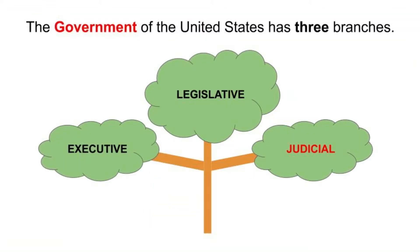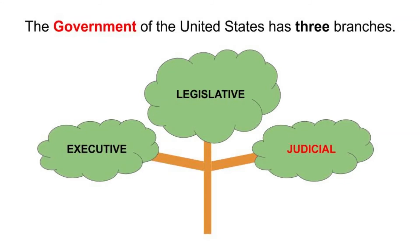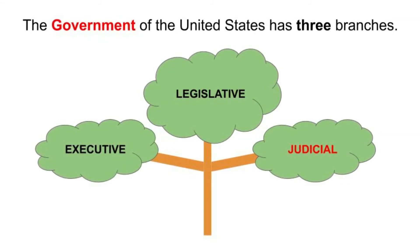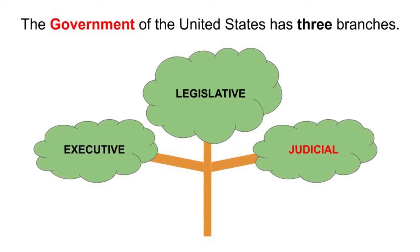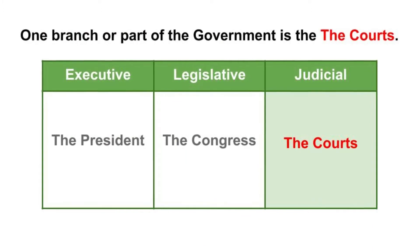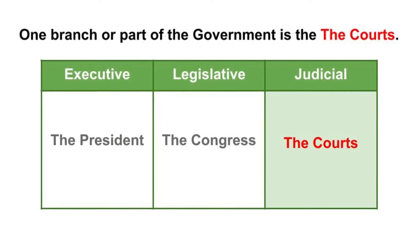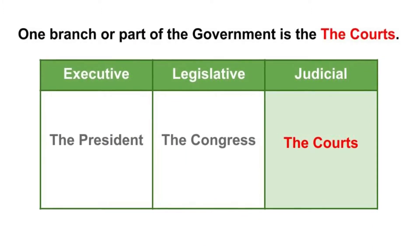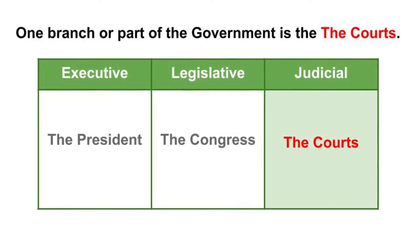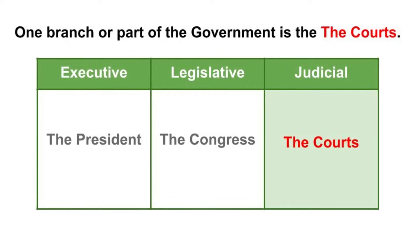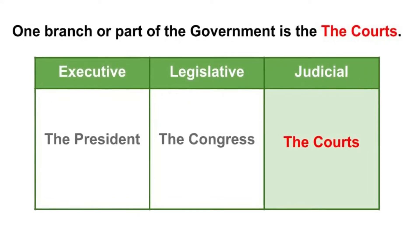The Government of the United States has three branches: Executive, Legislative, and Judicial. One branch or part of the government is the courts. This is the Judicial Branch.